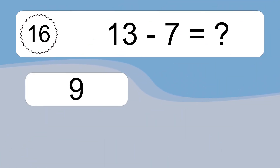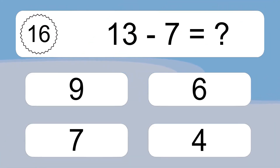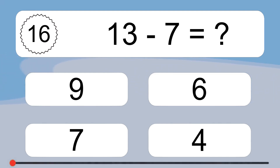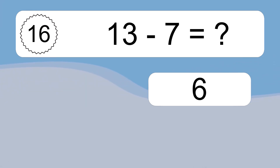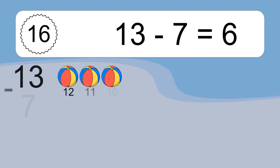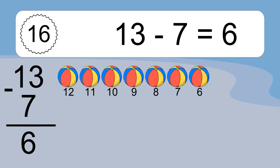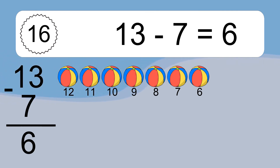13 minus 7 equals what? 13 minus 7 equals 6. Let's count it: 12, 11, 10, 9, 8, 7, 6.